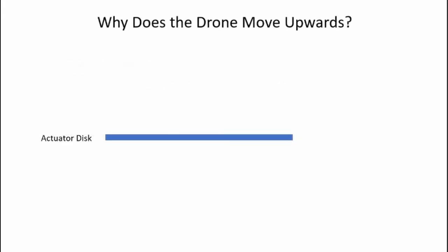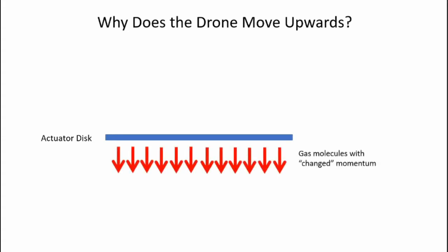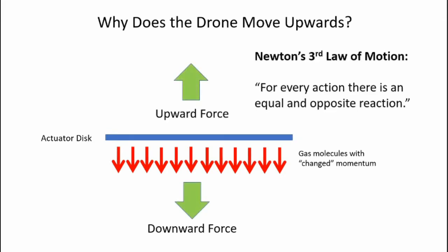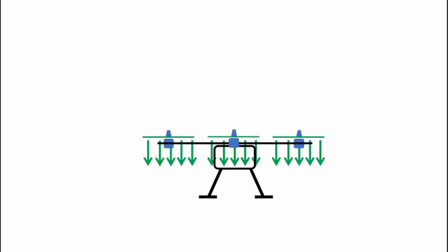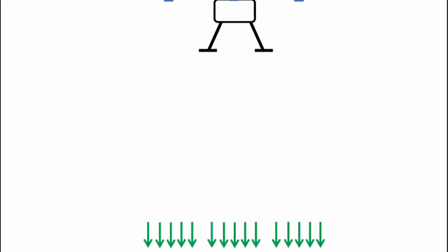So now why does the drone move upwards? Well here's our actuator disk. We're imparting momentum to the gas flow moving it downward, essentially creating a downward force. And Newton's third law of motion states for every action there is an equal and opposite reaction. So if there's a downward force there's going to be an equivalent upward force equal and opposite. It's this upward force that makes the drone move upwards. So here's our drone. Here's our upward thrust. We impart momentum to the flow and sure enough the drone goes upwards.